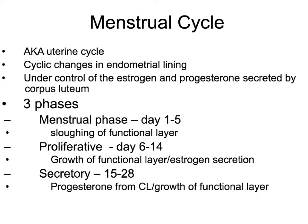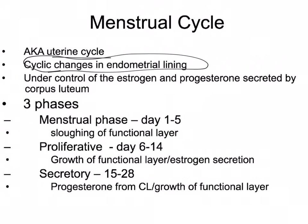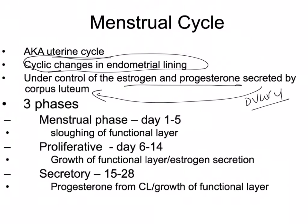Now we're going to talk about the menstrual cycle. The menstrual cycle is also known as the uterine cycle because it's what's going on in the uterus. Basically, it's the changes that are going on in the endometrium. It's under the control of the estrogen and the progesterone that's secreted by the corpus luteum — so basically the ovary and the corpus luteum is what's controlling what's going on in the uterus.